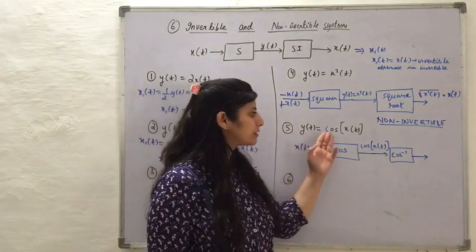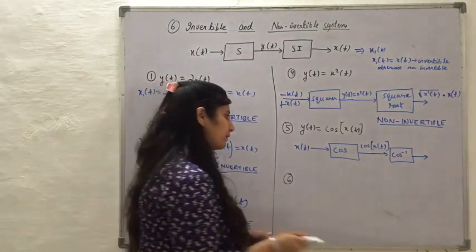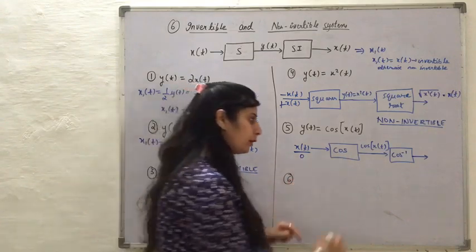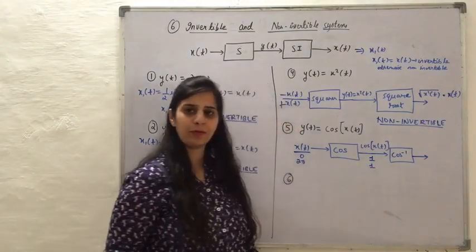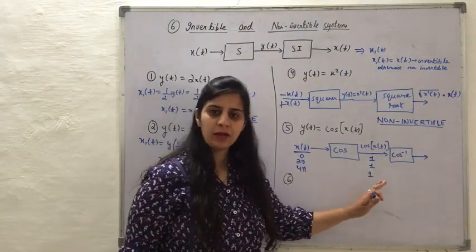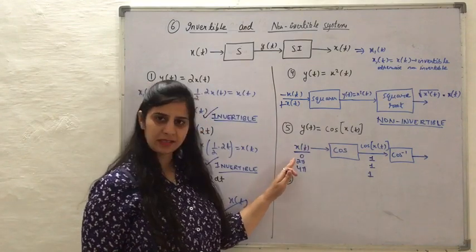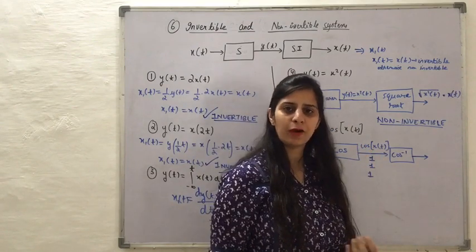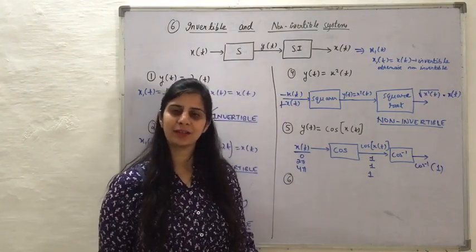The next system applies a cosine function to the input signal. To understand this better, let us take some values of Xt. When Xt = 0, cos(0) = 1. When Xt = 2π, cos(2π) = 1. When Xt = 4π, cos(4π) = 1. Just like the squarer case, we are getting the same output for more than one input signal. At the output side, when I take cos⁻¹(1), it is non-recognizable which input produced that output. This system is again a non-invertible system.